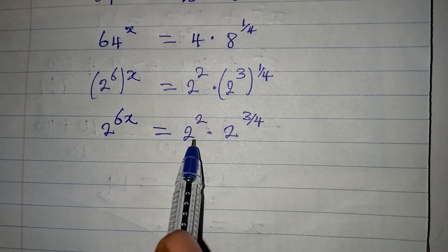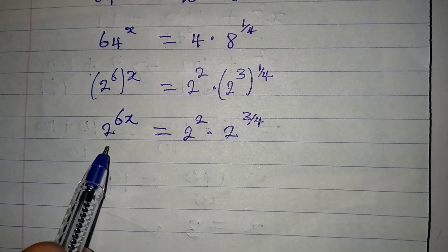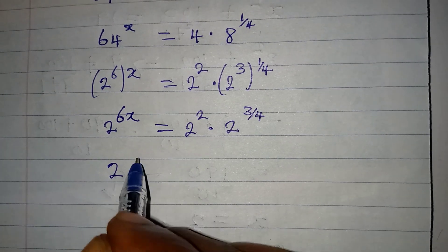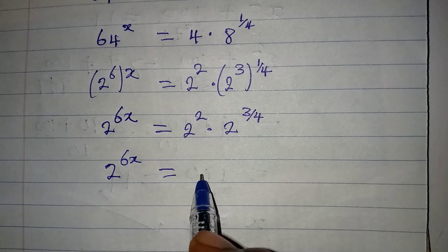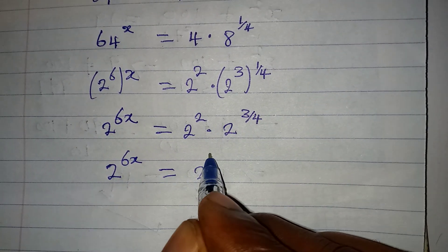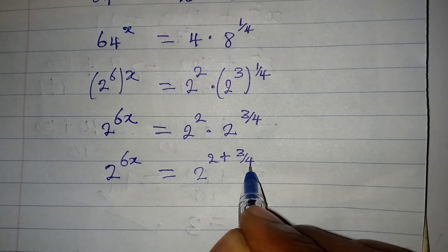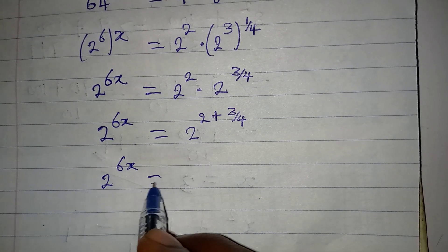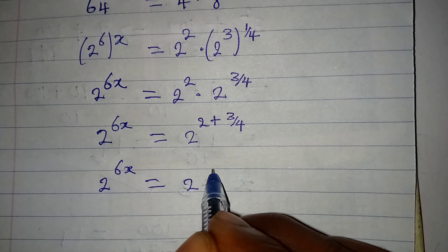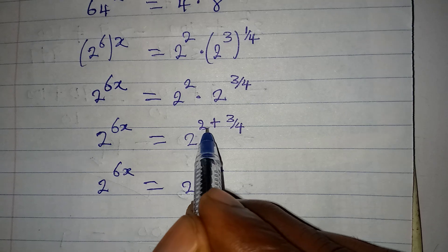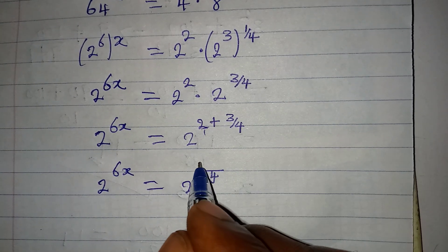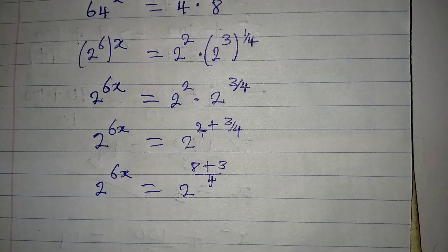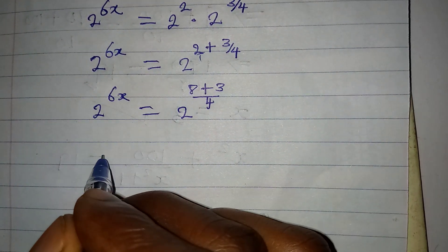I have to deal with the right-hand side first, because the bases are the same I can't cut across to the left yet. 2 to the power of 6x will be equal to — since the bases are the same, pick one of them and add the powers: 2 plus 3 over 4. The LCM is 4; 4 divided by 1 is 4 times 2 is 8, then 4 divided by 4 is 1 times 3 is 3.